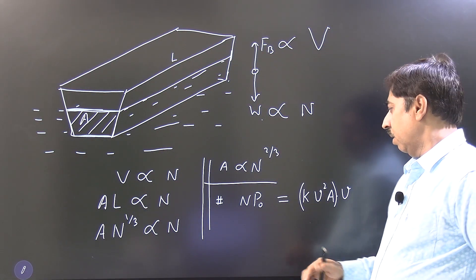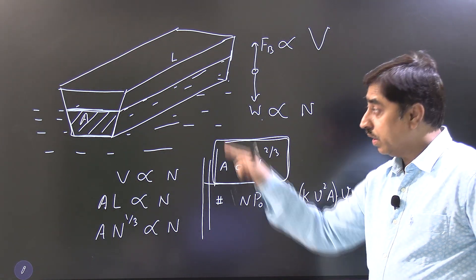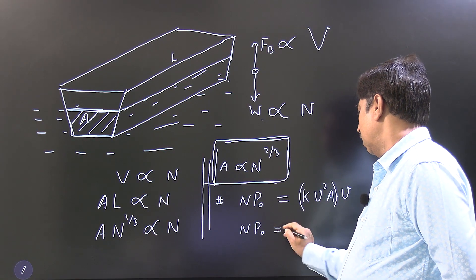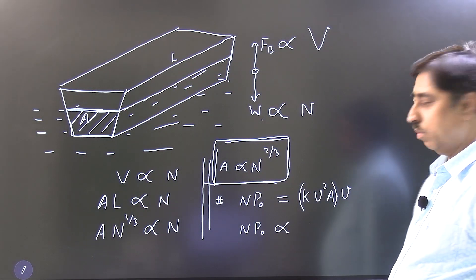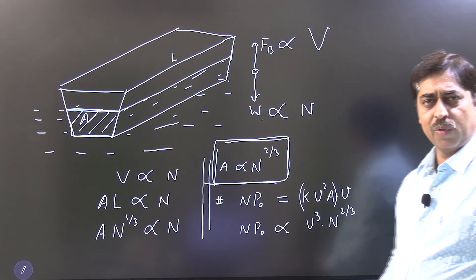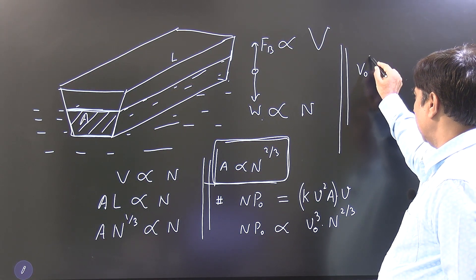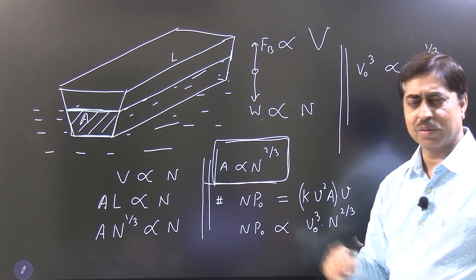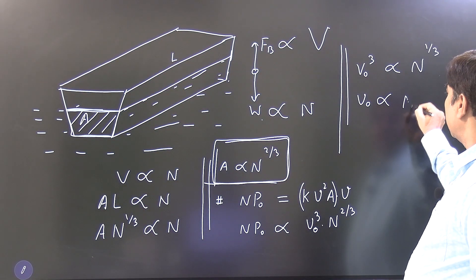When the boat moves at top speed, the drag force is k·v²·A. The power of this drag force is force multiplied by velocity, so drag power equals k·v³·A. Setting this equal to the total boatman power: n·P₀ = k·v₀³·A. Since A is proportional to n^(2/3), we get n·P₀ ∝ v₀³·n^(2/3), which gives v₀³ ∝ n^(1/3). Therefore, the top speed v₀ is proportional to n raised to the power 1/9.